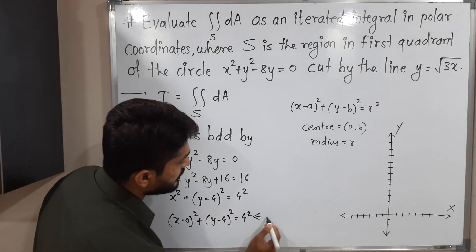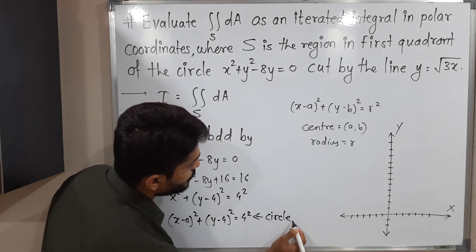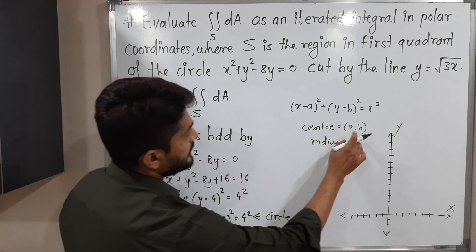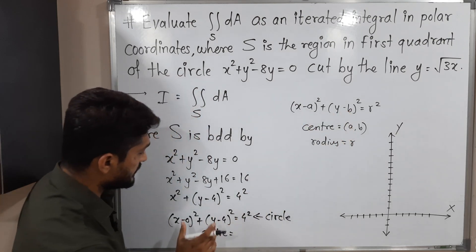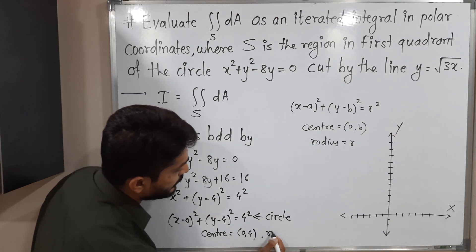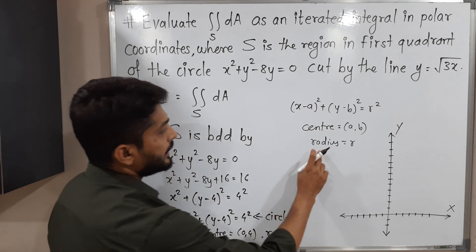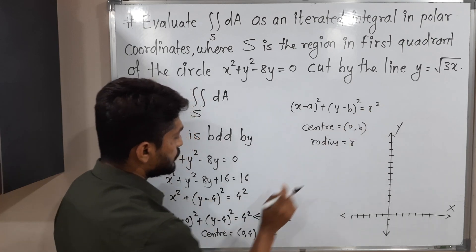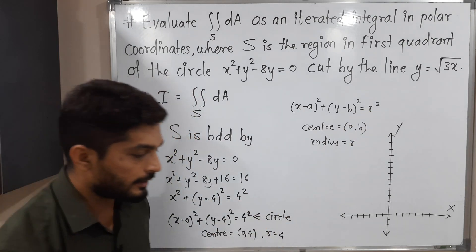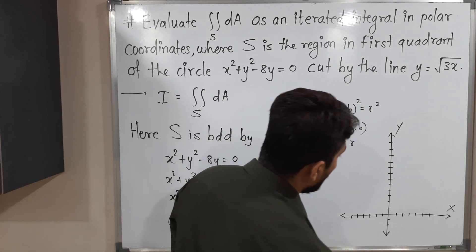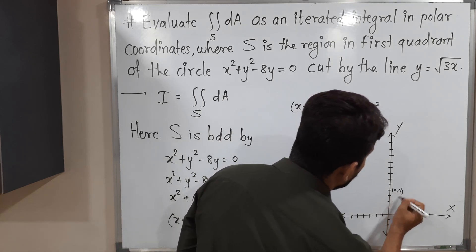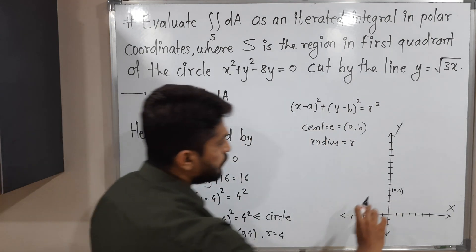We have written the given equation in standard form. So this is the equation of a circle. Its center is (0, 4) and radius is 4. So we have a circle with center (0, 4) on the y-axis, and radius 4. Let me draw a rough sketch of that circle.